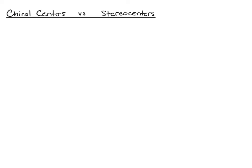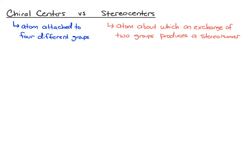Here we're going to take a look at the differences between chiral centers and stereocenters. These terms are often used interchangeably, but it's not quite accurate because there are some subtle differences. So first, let's refresh our definition of chiral centers. A chiral center is an atom that's attached to four different groups. Now let's take a look at the definition of a stereocenter. A stereocenter is an atom about which an exchange of two groups produces a stereoisomer.